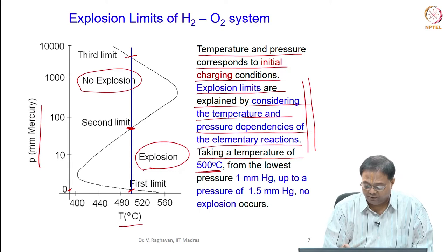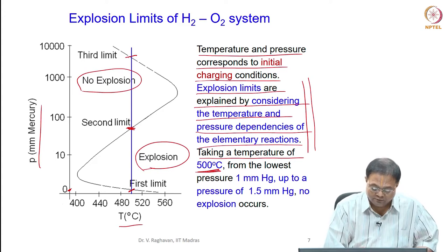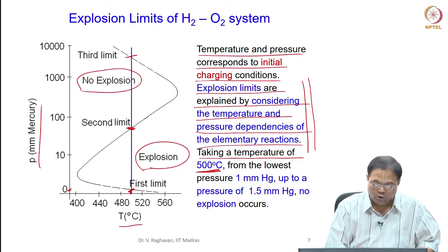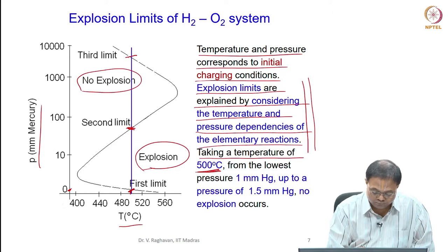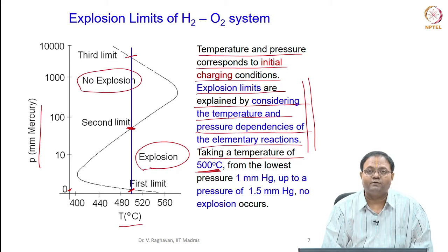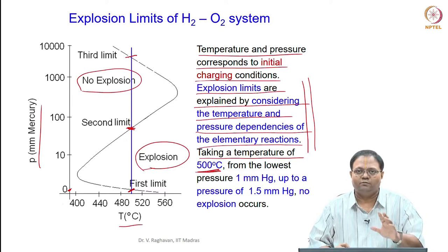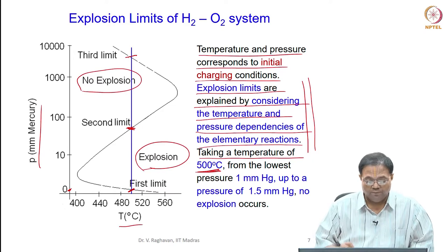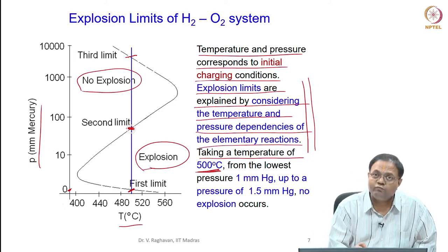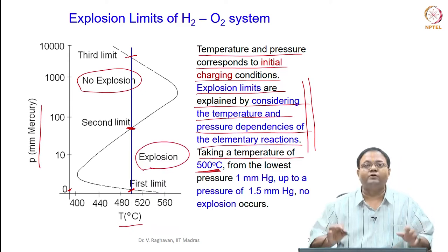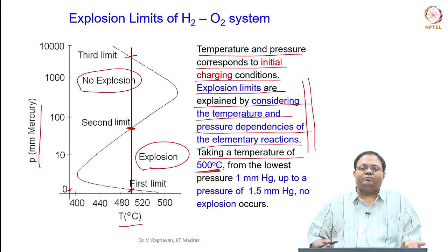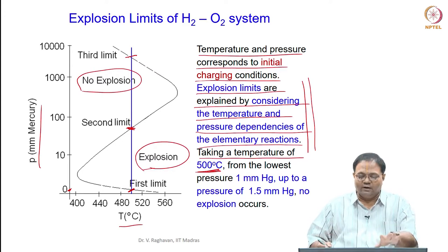When the pressure is increased beyond this point until the next point, no explosion occurs for the same temperature. What happens is: when the fill pressure is less than this first point - very low pressures - then no ignition takes place. When I go to this point, explosion occurs - that is ignition and pressure rise is seen. The magnitude of pressure rise can vary, but that is a short pressure rise compared to the full pressure. After this, when you increase the pressure further at the same temperature, there is no ignition.